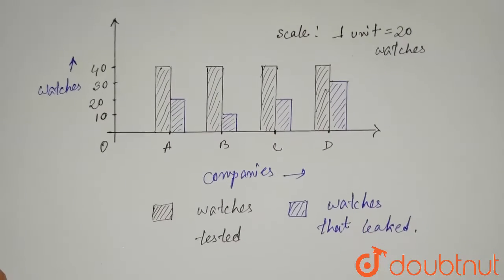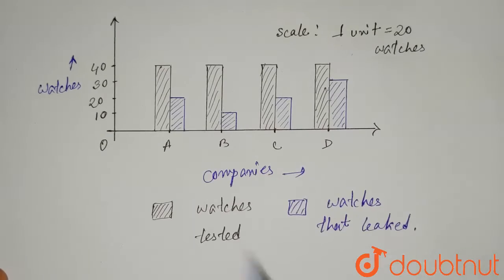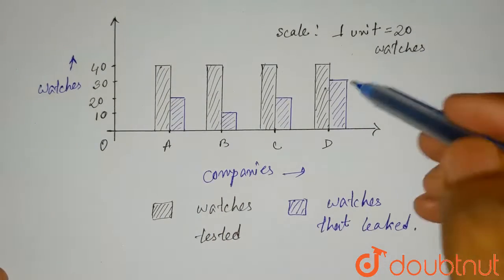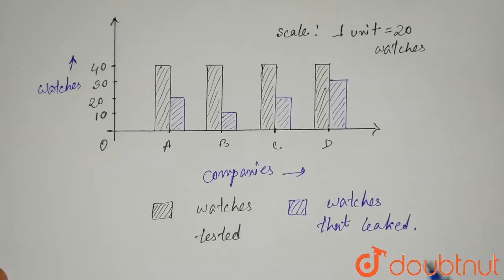So here is the graph given to us. If we look at the graph, we can see that the black bar represents the watches which were tested, and the blue bar represents the watches which were leaked.